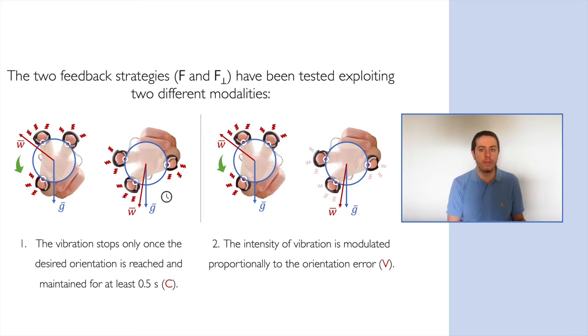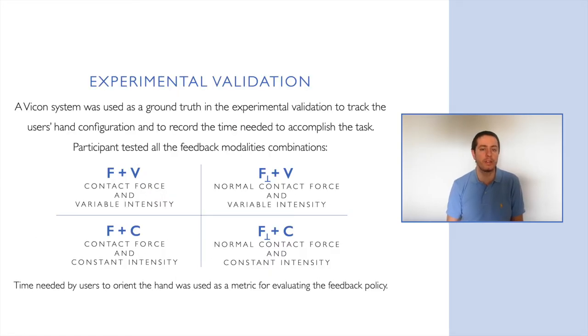In the first one, the vibrations were maintained constant until the goal orientation is reached. Differently, the second approach modulates the intensity proportionally to the orientation error. Participants tested all the feedback modalities combinations that are listed on the slide. So they tested the norm of the contact force with constant and variable intensity, and the normal of the contact forces with constant and variable intensity.